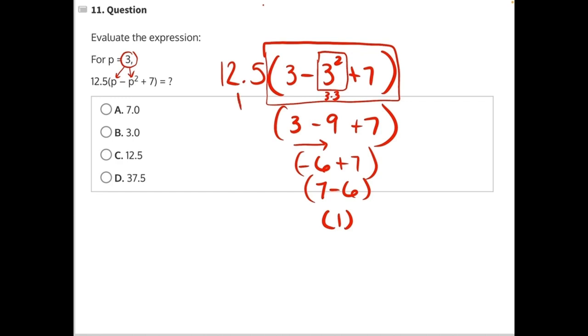And now we can bring down the rest of our expression. 12.5 is still being multiplied to everything in the parentheses. 12.5 times 1, anything times 1 is just itself. So our answer is 12.5, making C our correct answer.